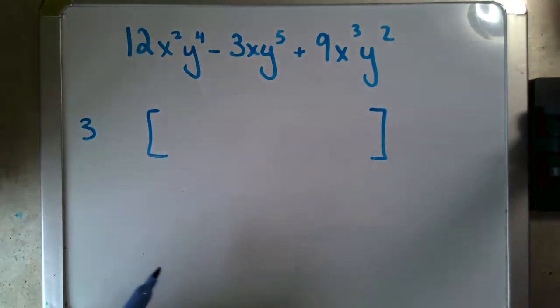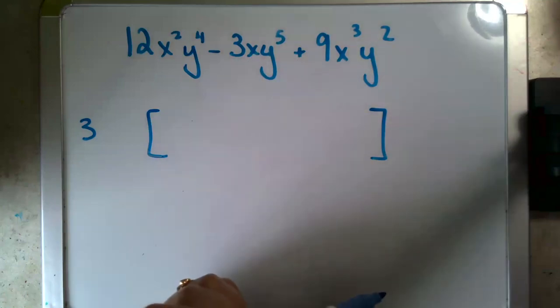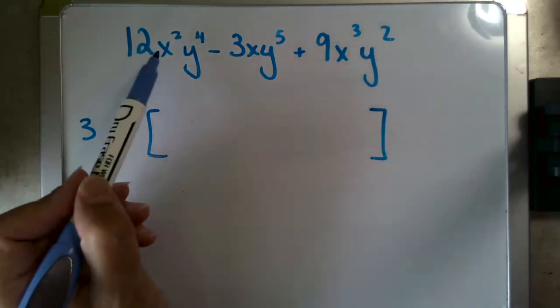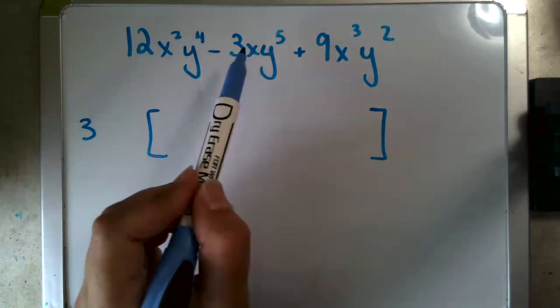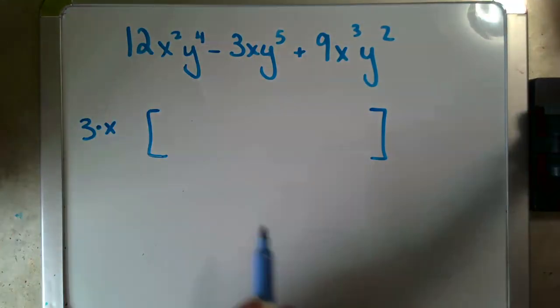Then I'll take a look at my x's. I've got an x squared, an x, and an x to the third. The greatest common factor there is my lowest degree of x. I can't divide an x squared out of x or an x cubed out of x, but I can divide an x out of each one of these. And then finally, I'm going to look at my y's.